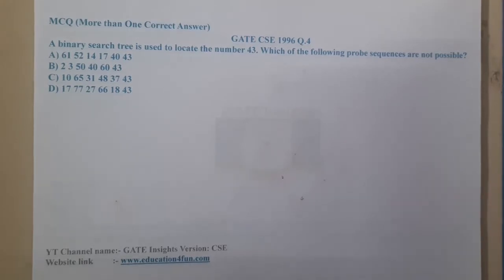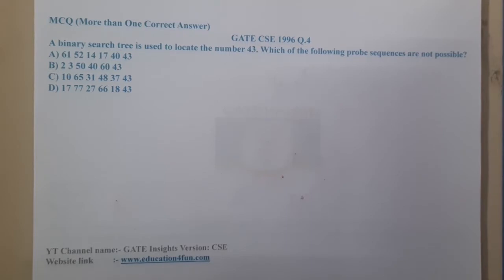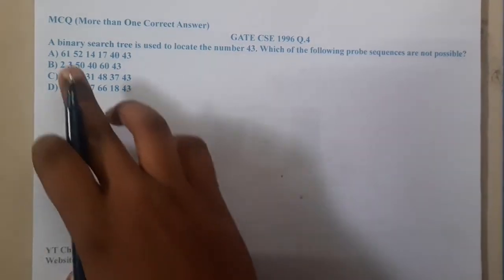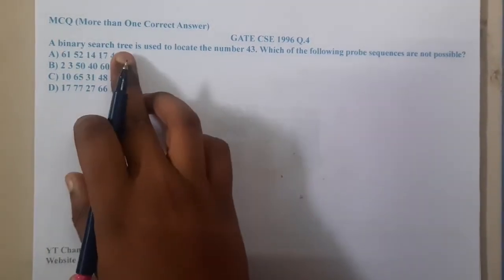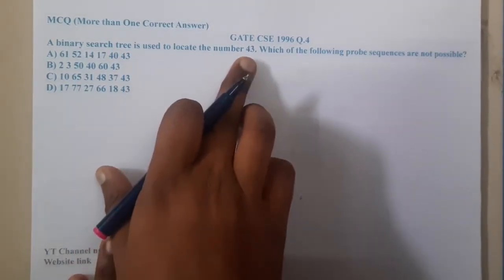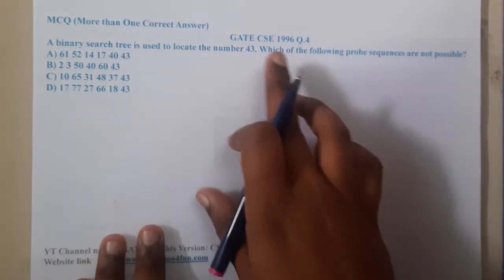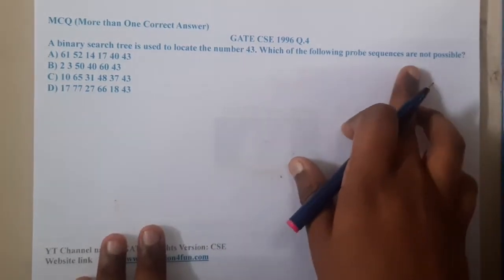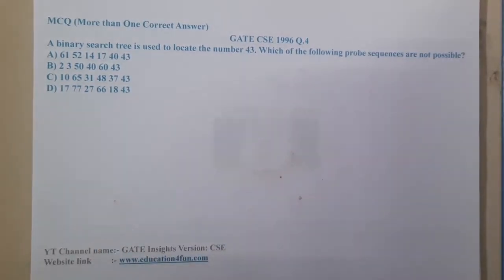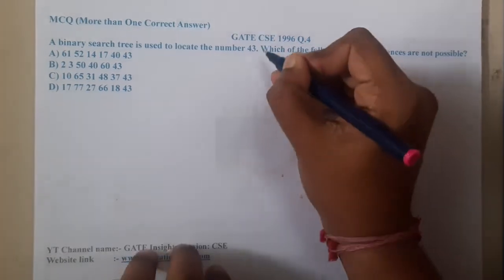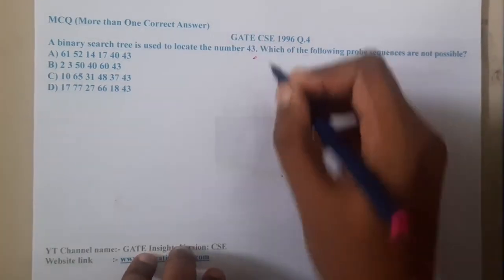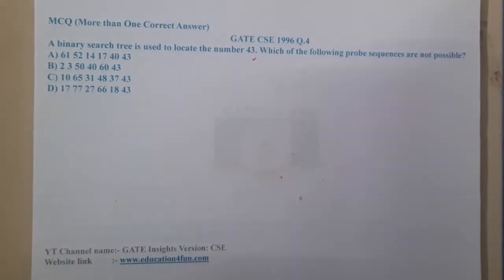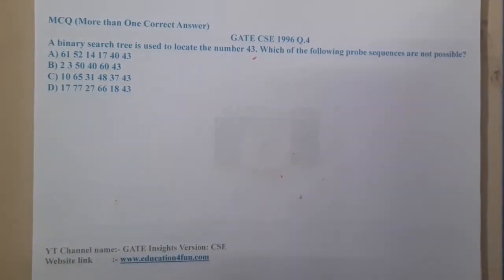Hello guys, we are back with our next lecture. In this lecture, let us go through the next question, that is GATE CSE 1996 Question 4. The binary search tree is used to locate the number 43. Which of the following probing sequences is not possible? I think these types of problems we did not discuss when we covered the course — I forgot to discuss these types of problems.